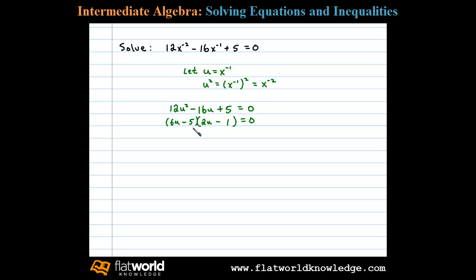Once we get it factored correctly, we then set each factor equal to 0. So either 6u minus 5 equals 0, or 2u minus 1 equals 0. This says 6u equals 5 or 2u equals 1. u equals 5 sixths, or u equals 1 half.